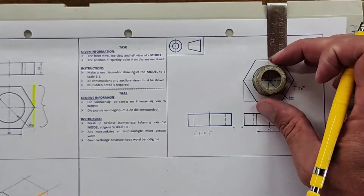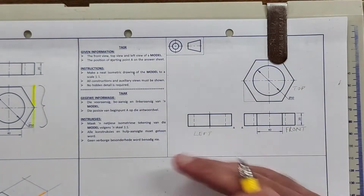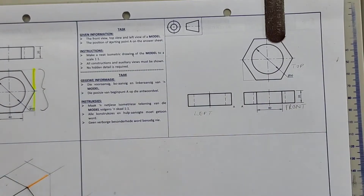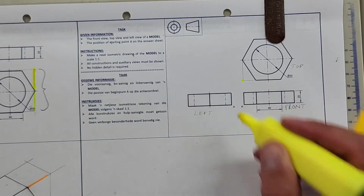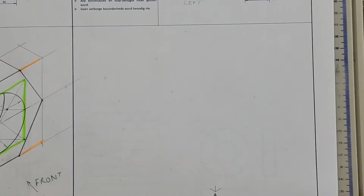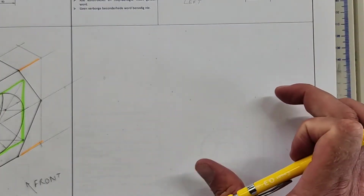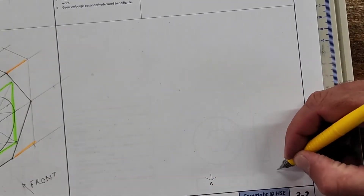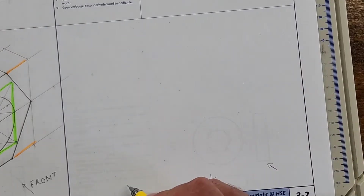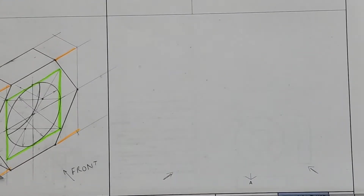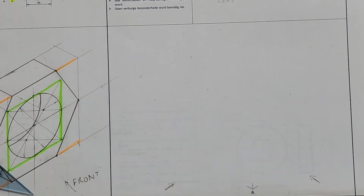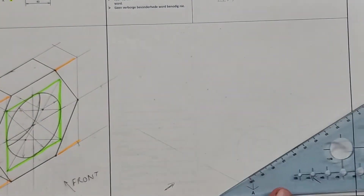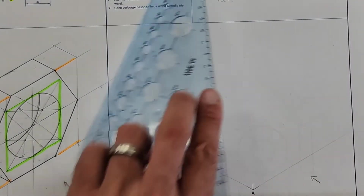So looking at my starting point, where point A is — that point, or that one, or that one. If I look from the top I'll see the flat part. From the front I'll see three faces, and from the left I'll see two faces. We're going to need an auxiliary view, and the start is going to be at 30 degrees, with the height being 20 and the width being 20.